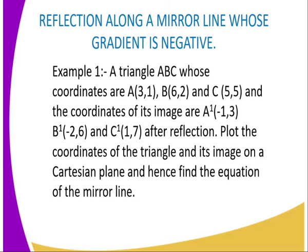Example one: a triangle ABC whose coordinates are A(3, 1), B(6, 2), and C(5, 5). The coordinates of its image are A'(-1, 3), B'(-2, 6), and C'(1, 7) after reflection. Plot the coordinates of the triangle and its image on a Cartesian plane and hence find the equation of the mirror line.